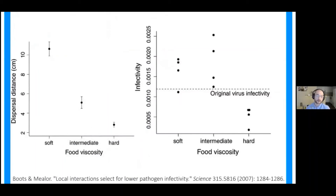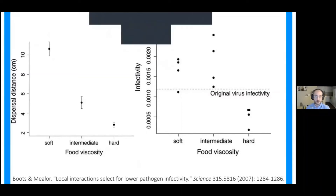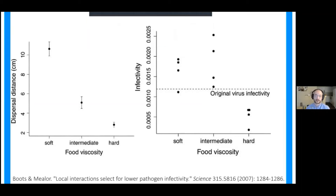Similarly, this was shown in a larger organism — Plodia interpunctella with their granulosus virus, a system that some of my PhD work focused on — whereby manipulating the viscosity of the food media in which they live limits their dispersal, altering spatial structure. As food becomes more viscous, spatial structure increases, and the infectivity of the virus drops as it is selected to become less virulent and less infectious.